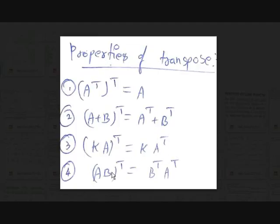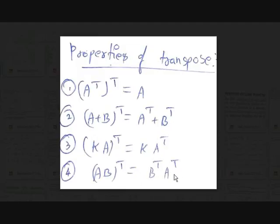The fourth property is somewhat different for the product of two matrices. If we take two matrices A and B, then (AB)-transpose equals B-transpose times A-transpose. Why? When you multiply A and B you multiply rows with columns, but when you find the transpose it means you have multiplied columns of the second matrix with rows of the first matrix, so it becomes B-transpose times A-transpose.